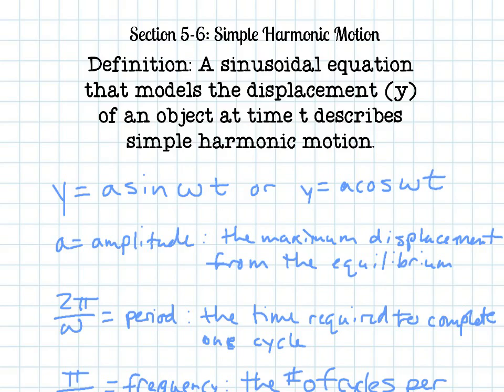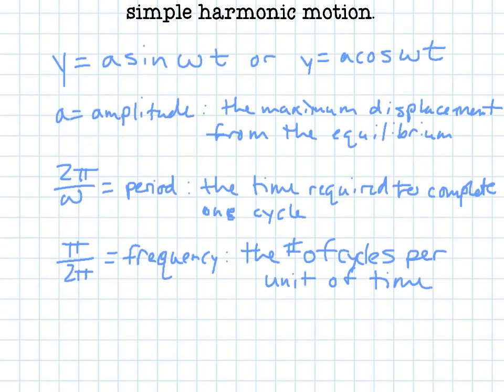A still stands for the amplitude. And then, 2 pi over this new omega equals the period. And then, we also have something called frequency.